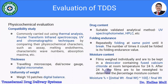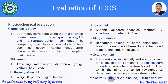After 24 hours, films are re-weighed to determine the percent moisture content. The moisture present in the patch is absorbed by the fused calcium chloride. The percent moisture content is calculated using the formula: percent moisture = (initial weight − final weight) × 100 / final weight of the patch.